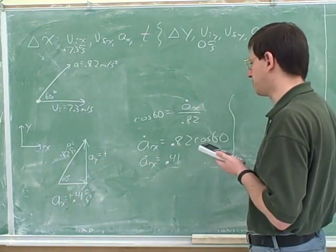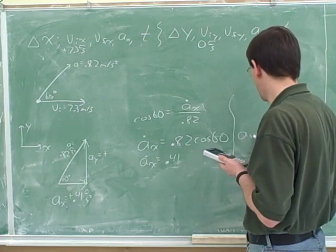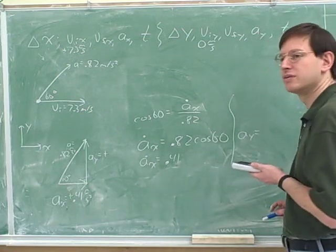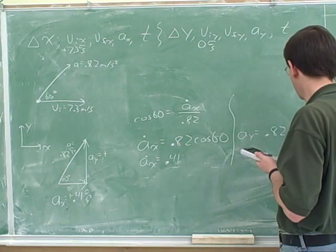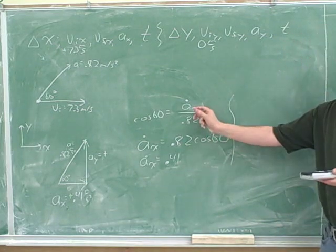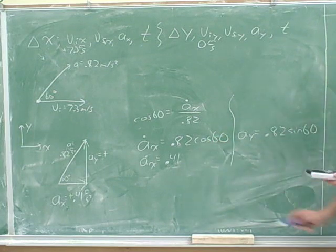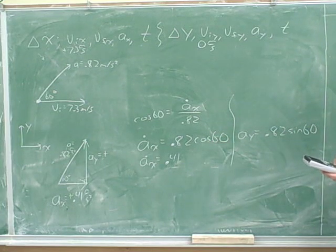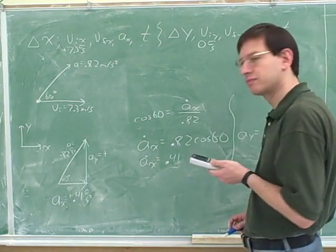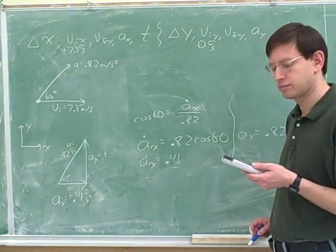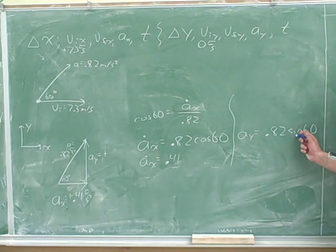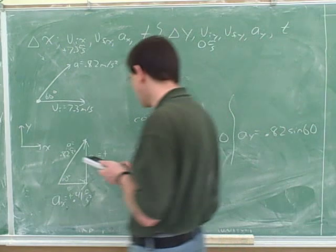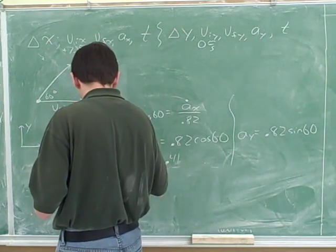So what equation would we use to figure out a sub y? Sine 60 times 0.82. That's right. We could start with a fraction, or we could just go straight to this step over here. And that gives us 0.71. It gives us something different, because here we're taking the sine, not the cosine. So we'll round that off to 0.71.